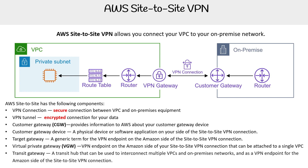Then we have transit gateway, which is a newer service that can be used in a VPN. Transit gateway is a transit hub that can be used to interconnect multiple VPCs and on-premise networks, and also serves as a VPN endpoint for the Amazon side of the site-to-site VPN connection. We'll take a look at that shortly.